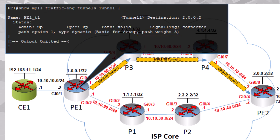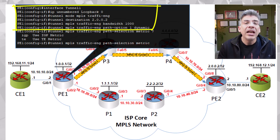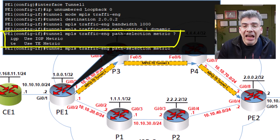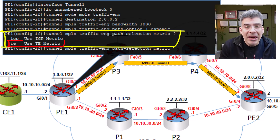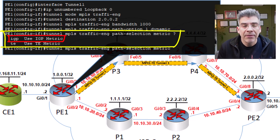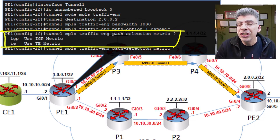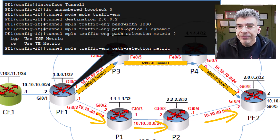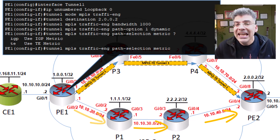There's one more thing to show. Going into the configuration of the tunnel interface on PE1, we can see the configuration already applied to establish our tunnel. Using the tunnel MPLS traffic-eng path-selection metric command, we can choose whether the tunnel uses the underlying TE metric or the IGP metric to establish its path. By default the TE metric is used, but you can make the tunnel use the IGP metric. If we were to change this to IGP, the tunnel would immediately re-establish via P1 and P2, because the IGP metric of that path is lower. This is one method to create multiple tunnels and make each take a different path through the topology.